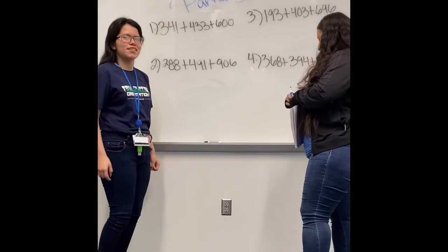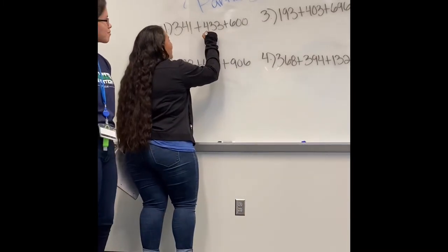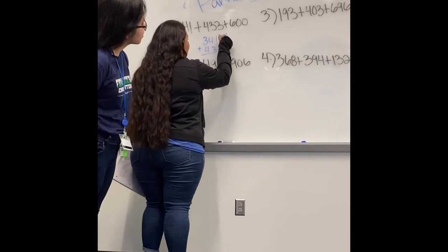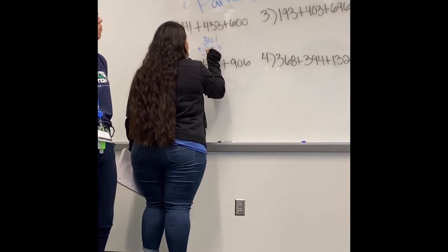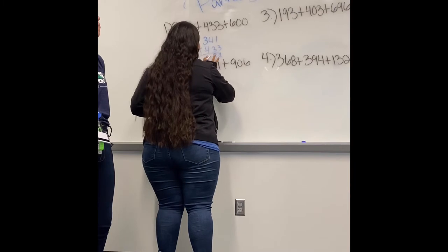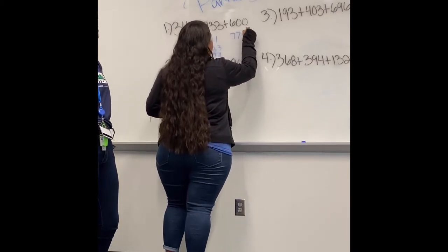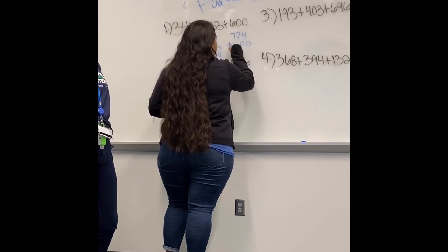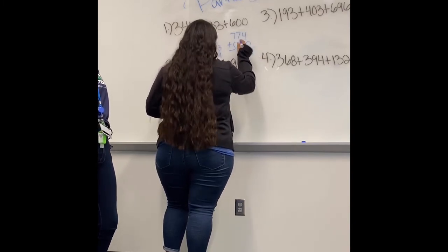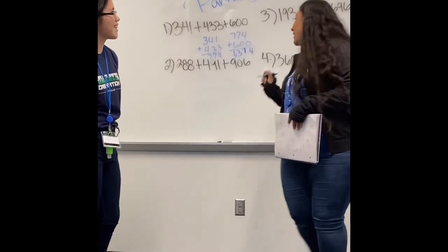So what I did is 341 plus 433, then 478, and I made a little error but 4 plus 3 is 7, so that's 774. So what I did is 774 plus 600, and then 4 plus 7 is 7, and 7 plus 6 is 13, so you get 1,374. Okay, so that stands. Thank you.